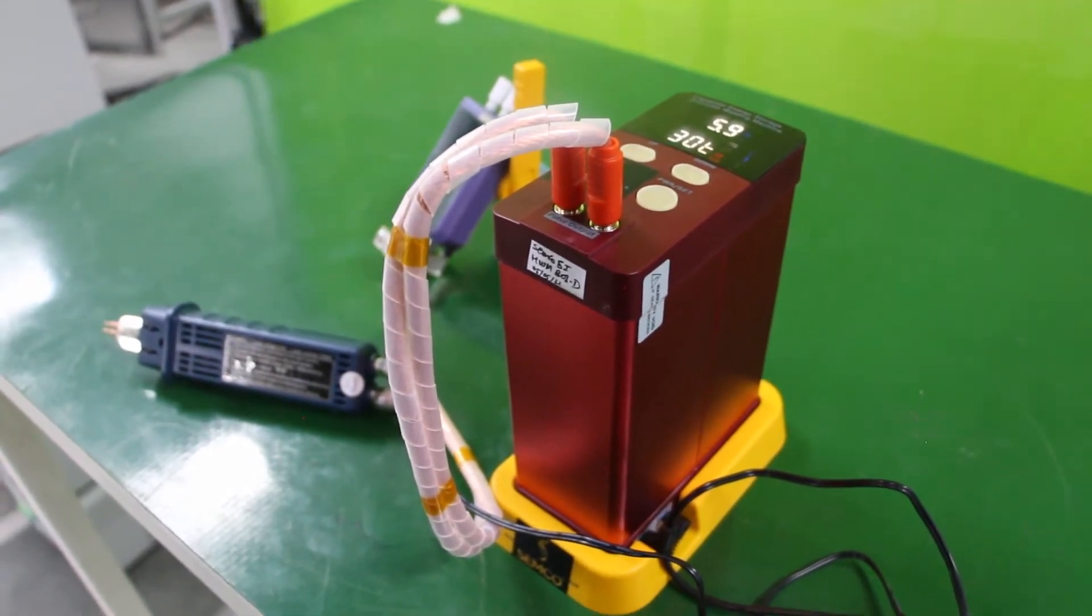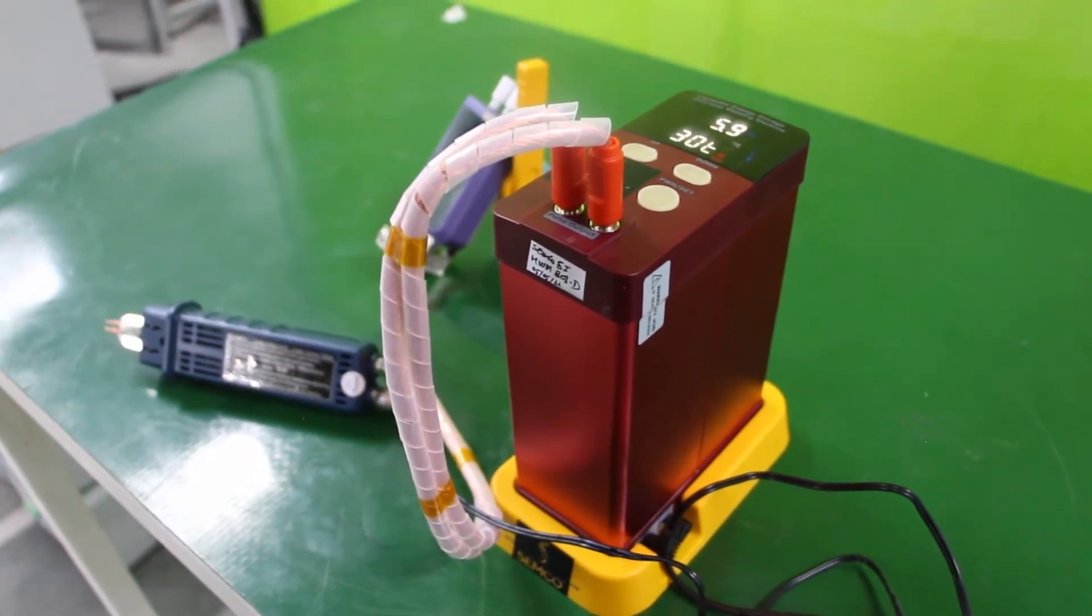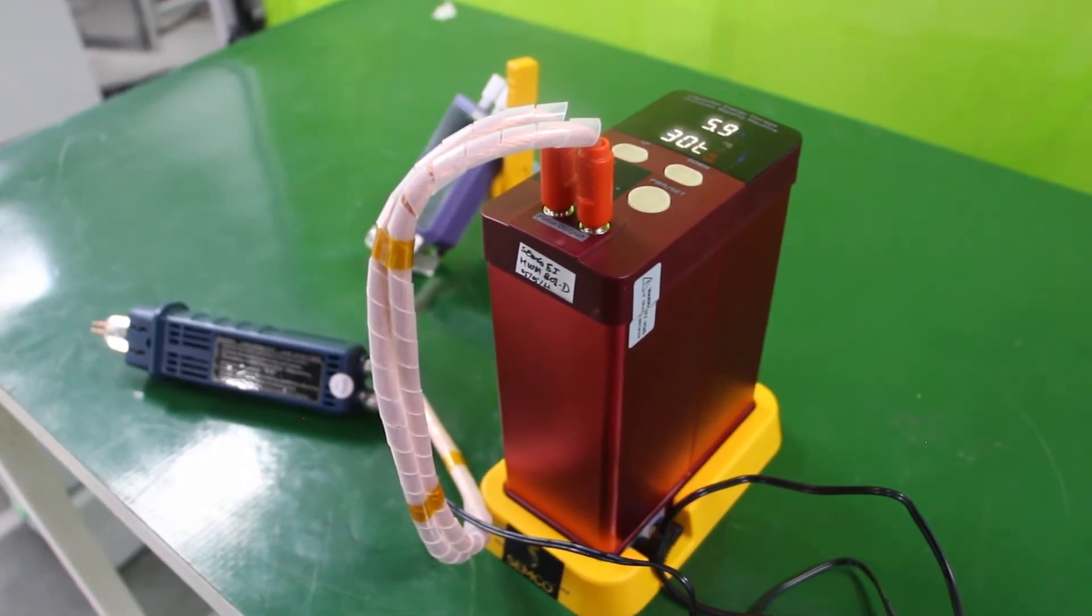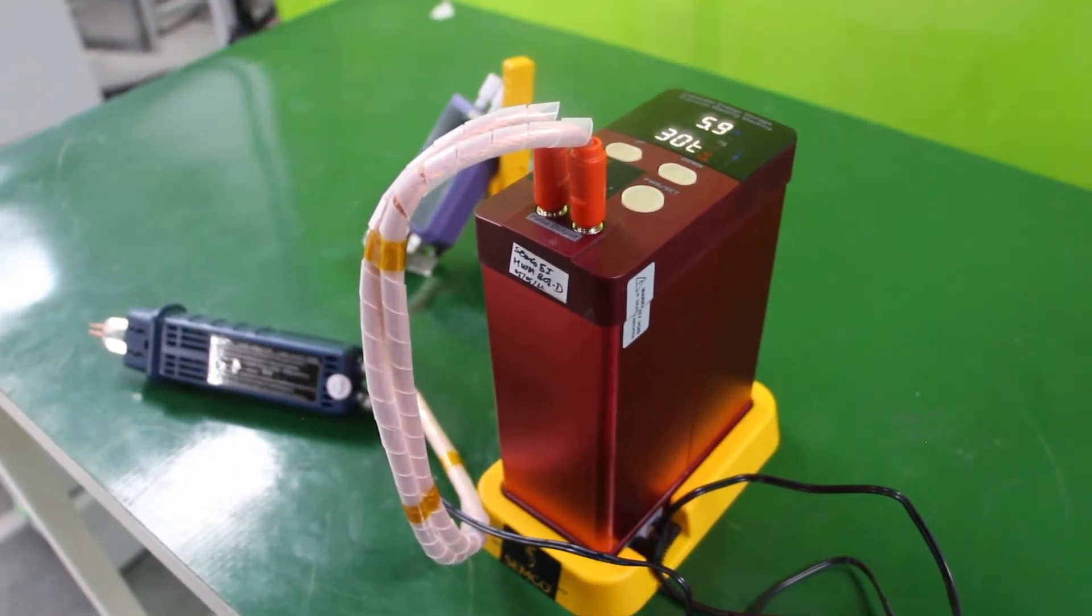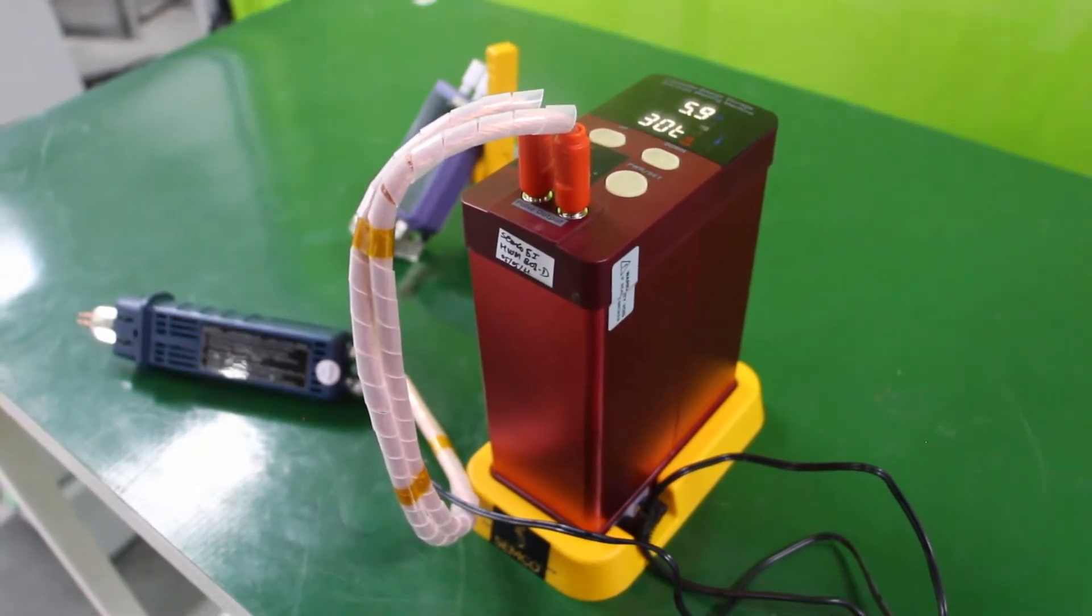This machine uses the latest energy gathering pulse welding technology and has great welding power. The welding spot is nice and elegant ensuring a reliable welding effect. The maximum welding power can be up to 12kW, meeting the needs for large battery weldings.